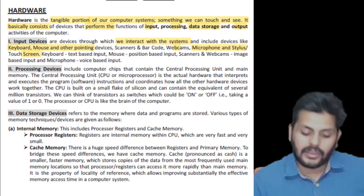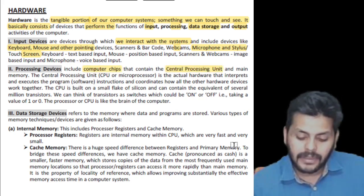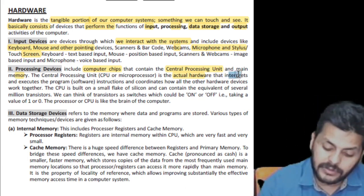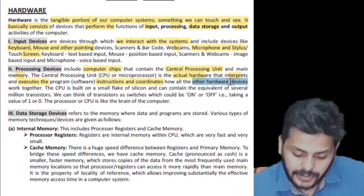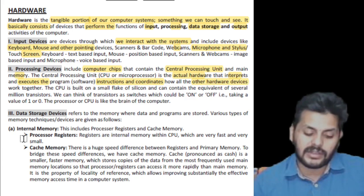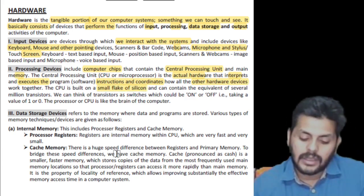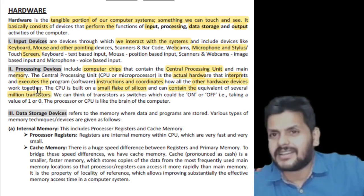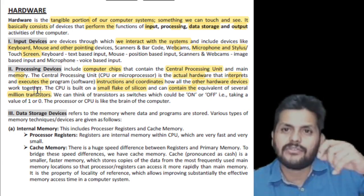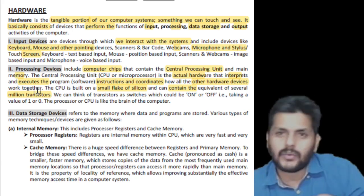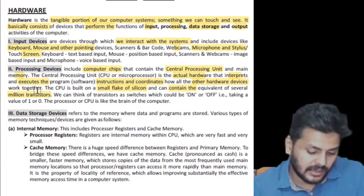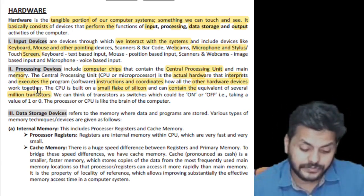Processing devices include computer chips containing the CPU and also the main memory. The CPU is the actual hardware that interprets and executes program instructions and coordinates how all other hardware devices work together. The CPU is built on a small flake of silicon and can contain the equivalent of several million transistors.